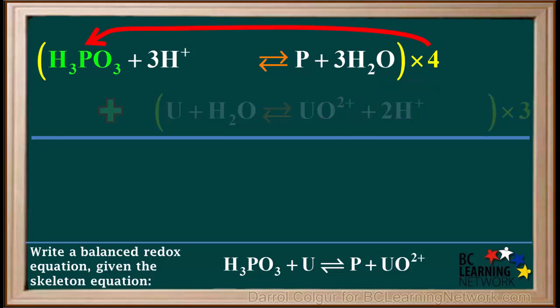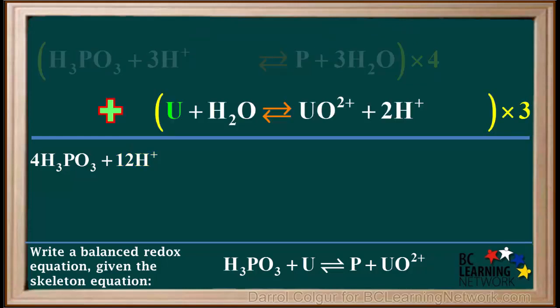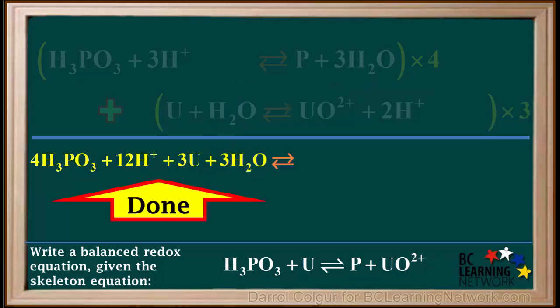So, starting on the top left, we have 4 times 1H3PO3, which is 4H3PO3, and 4 times 3H+, which is 12H+. Now we'll move to the bottom left. We have 3 times 1U, which is equal to 3U, and we have 3 times 1H2O, which equals 3H2Os. The left side is now done.